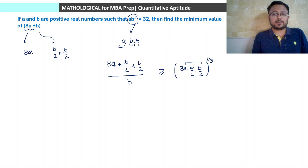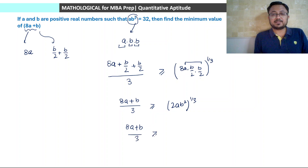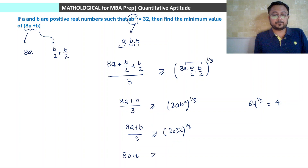So 8a plus b divided by 3 is greater than or equal to cube root of 2 times ab², which is 2 times ab² to the power 1 by 3. Since ab² equals 32, this becomes 2 into 32 to the power 1 by 3, which is 64 to the power 1 by 3. Since 64 is 4 cubed, this equals 4. So 8a plus b is greater than or equal to 12, and the answer is 12.